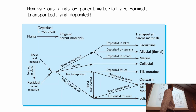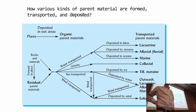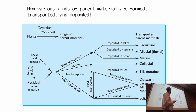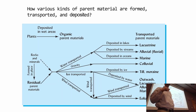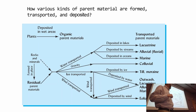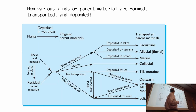Residual parent material can be transported in different ways. Looking at a figure, the agent of transportation matters. It can be water-transported, and depending on the type of water, you have different names. If deposited in lakes, it's lacustrine. If deposited by streams, it's alluvial or fluvial — normally called alluvial soils. If deposited in oceans, it's marine.